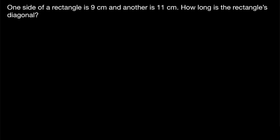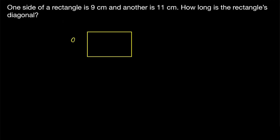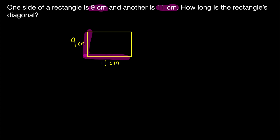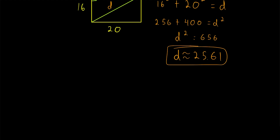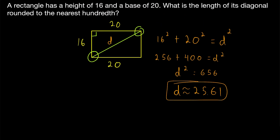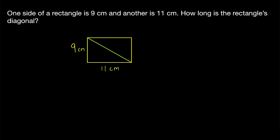Now we can speed up a bit. One side of a rectangle is 9 centimeters and another is 11 centimeters. How long is the rectangle's diagonal? We'll draw a rectangle — this side is 9 centimeters and another side is 11 centimeters. Since this is a rectangle, these two measurements refer to sides that are not opposite each other, because opposite sides must have the same length. The diagonals of a rectangle are congruent, so it doesn't matter which diagonal you draw — you'll get the same answer.